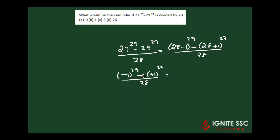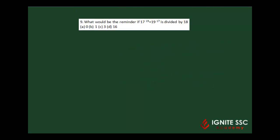So what would be the remainder? Minus 1 minus 1, so it would be minus 2 by 28. When you get a negative remainder, your actual remainder will be your divisor plus your negative remainder. So that is 28 minus 2, which equals 26. That is the right answer.